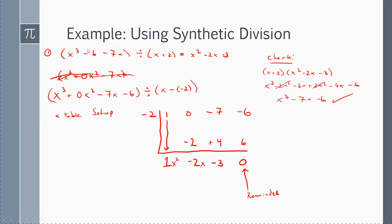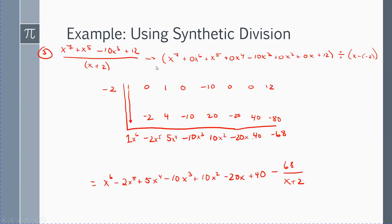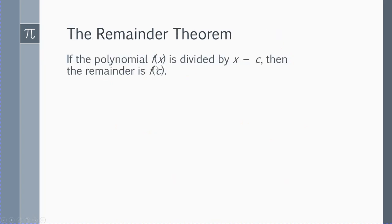If you take x cubed minus 6 minus 7x and divide it by x plus 2, then if you were to take the value of c, which would be negative 2, and plug it in, you would get 0.